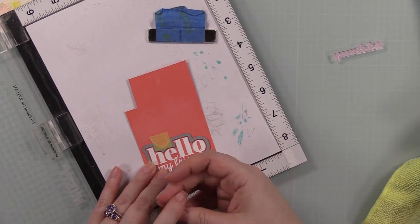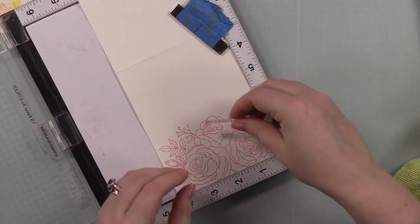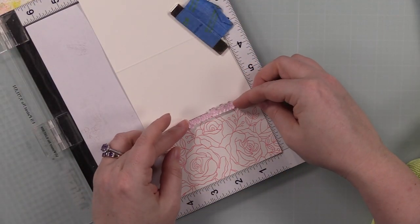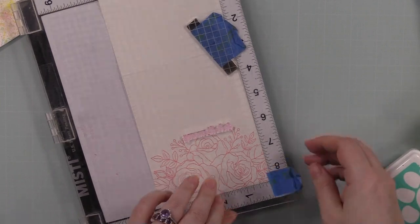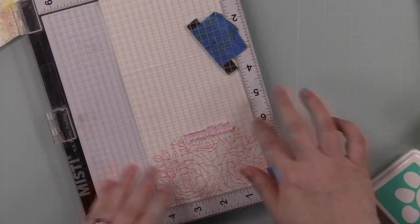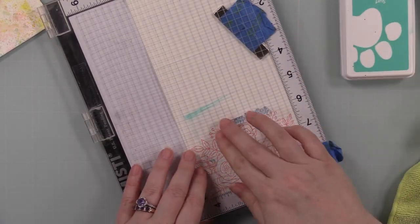I have another sentiment from that same set. I'm going to line that up right above those florals that I stamped on the inside of the card. I'm inking this up with Simon's Surf ink, pulling in that aqua color that I used on the front of the card. I'll stamp that.